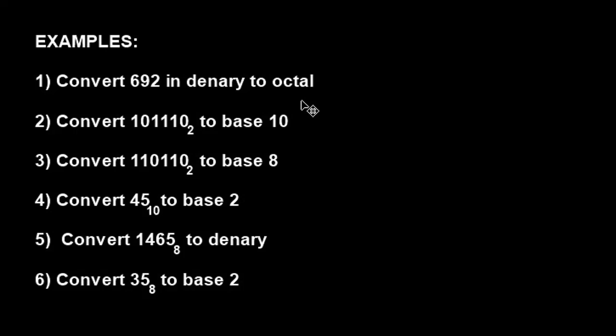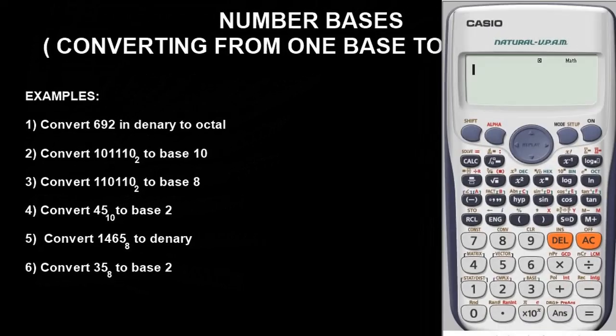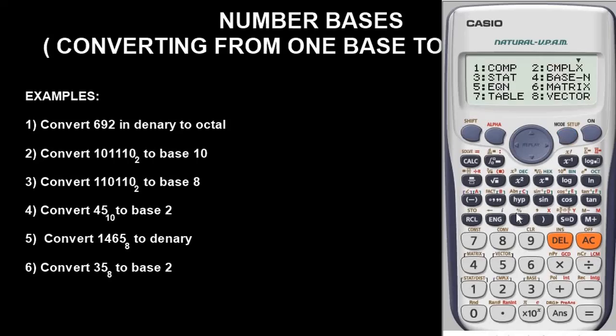So let's use the Casio calculator to solve the problem together. It is very, very simple. To begin with, we are going to put the calculator in base mode. To do that, you simply press the MODE button. Category 4 represents base, so you press button 4. It is now in base mode.